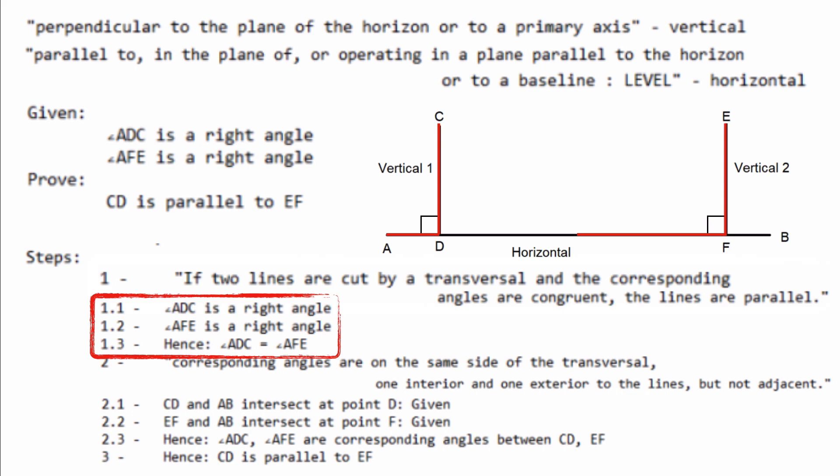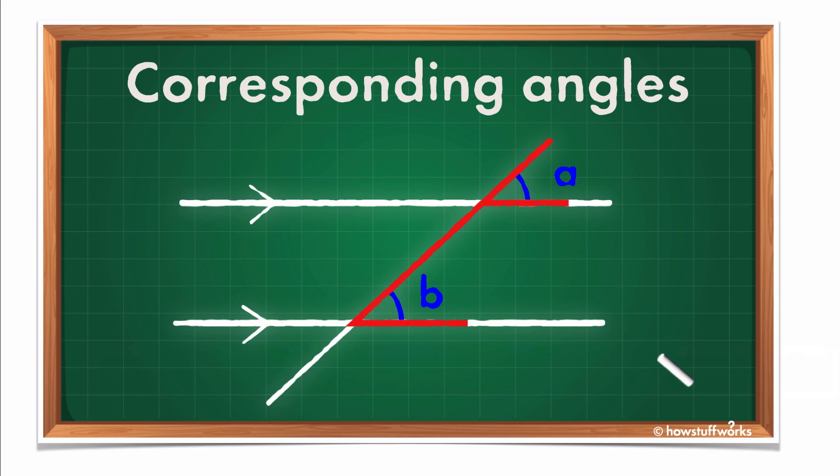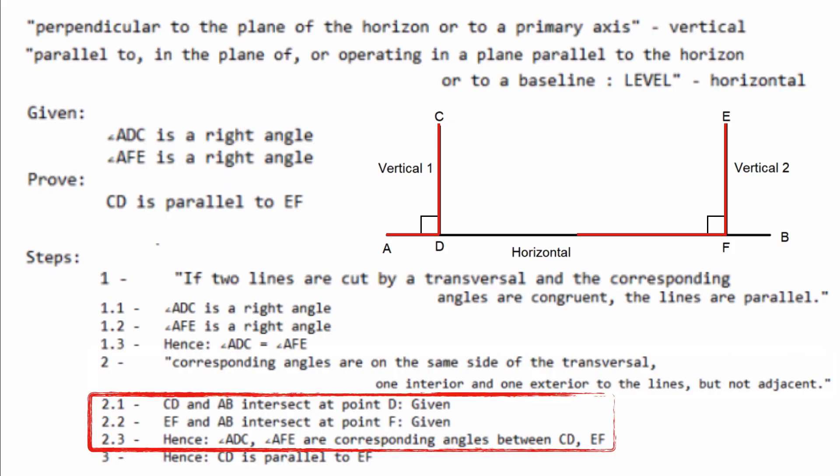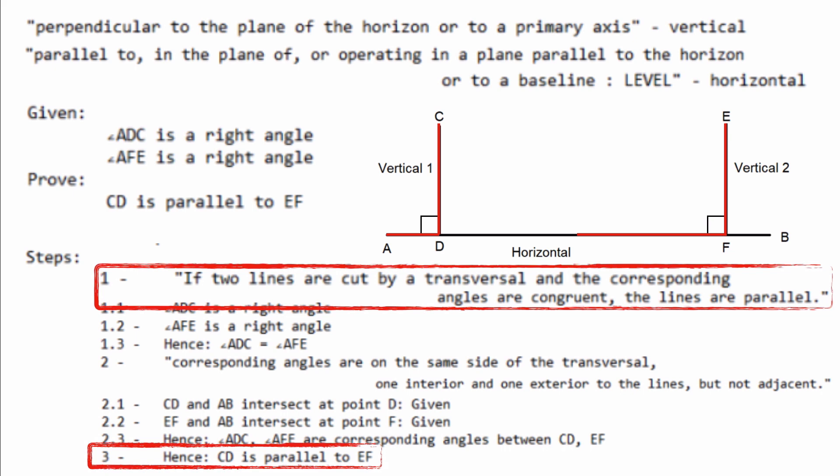He then describes what corresponding angles are, on the same side of the transversal, but with one interior and one exterior. Here's an illustration of corresponding angles. He then describes how the two lines intersect the baseline forming corresponding angles, which gives us our conclusion that CD is parallel to EF.